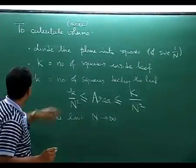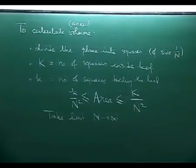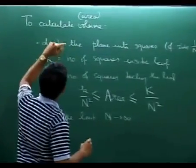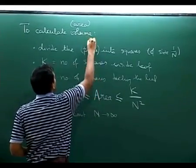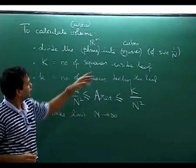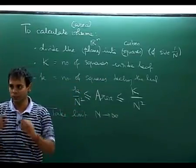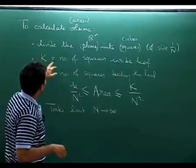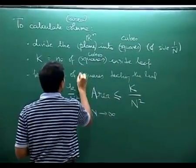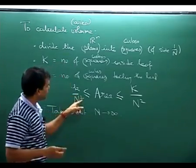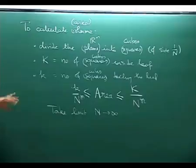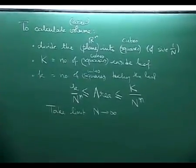For higher dimensions you divide R^n not into squares but into hypercubes of side 1/n, count cubes inside the shape and cubes touching the shape, and instead of dividing by n^2 you divide by n^n, then take the limit as n tends to infinity. This volume has a very simple and concrete interpretation.